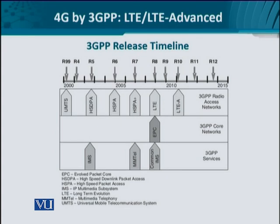Looking at the timeline, here we see the Universal Mobile Telecommunication System, UMTS, which introduced the Release 99 recommendations that included the incorporation of data services on circuit-switched voice networks. In Release 4 and 5, certain recommendations were made to improve the data rate. The HS-DPA and HS-UPA were related to high-speed packet access, with speeds improving from kilobits per second to megabits per second in upload and download. The HS-DPA+ was an improvement to HS-DPA through enhancements at the physical layer.